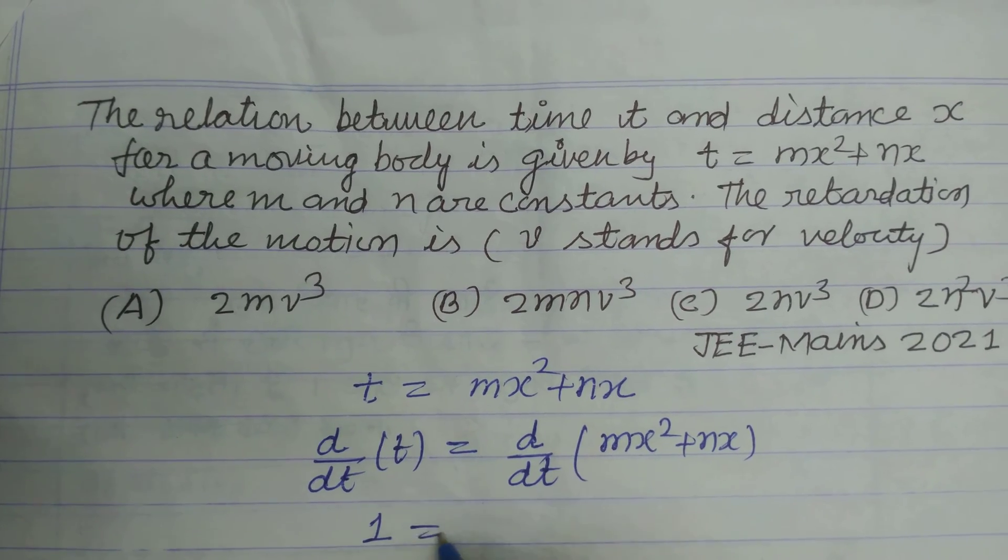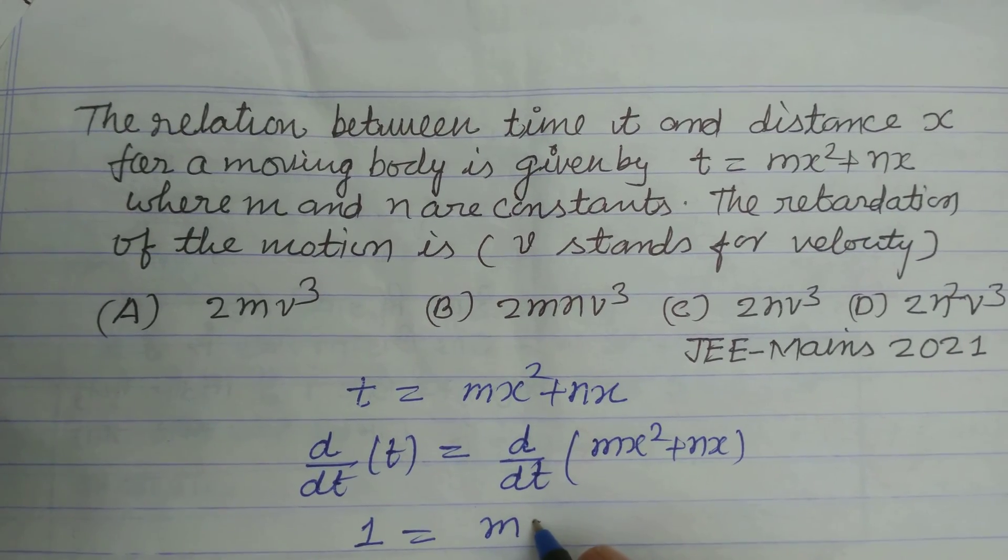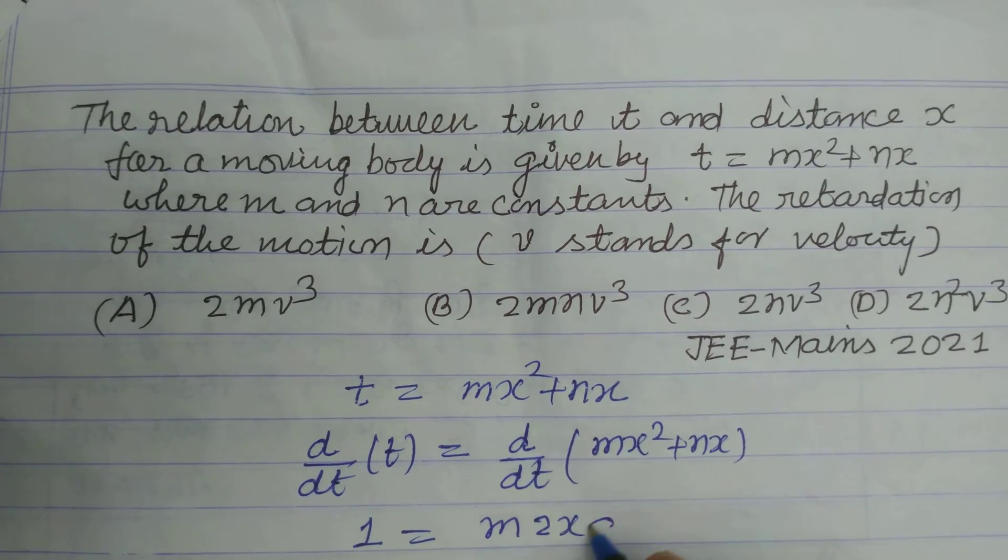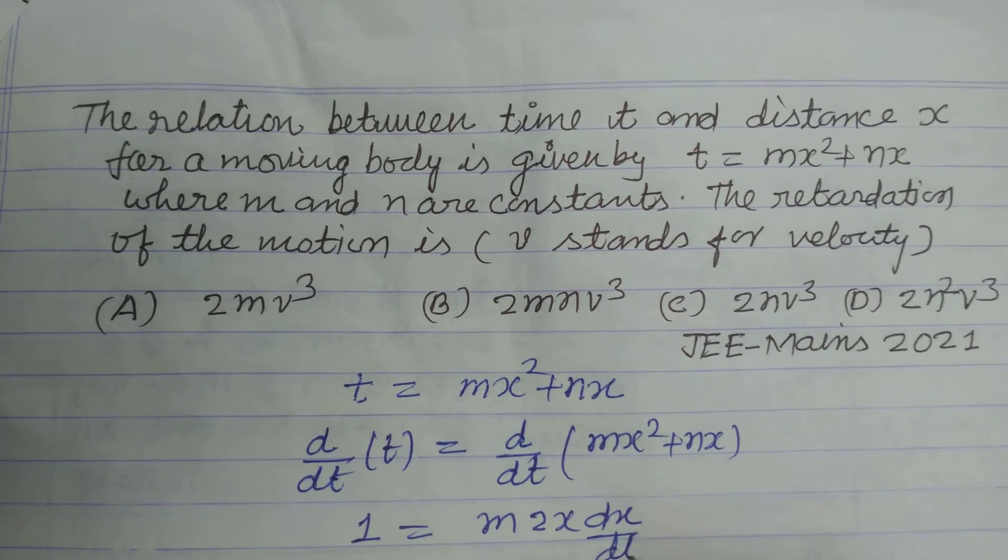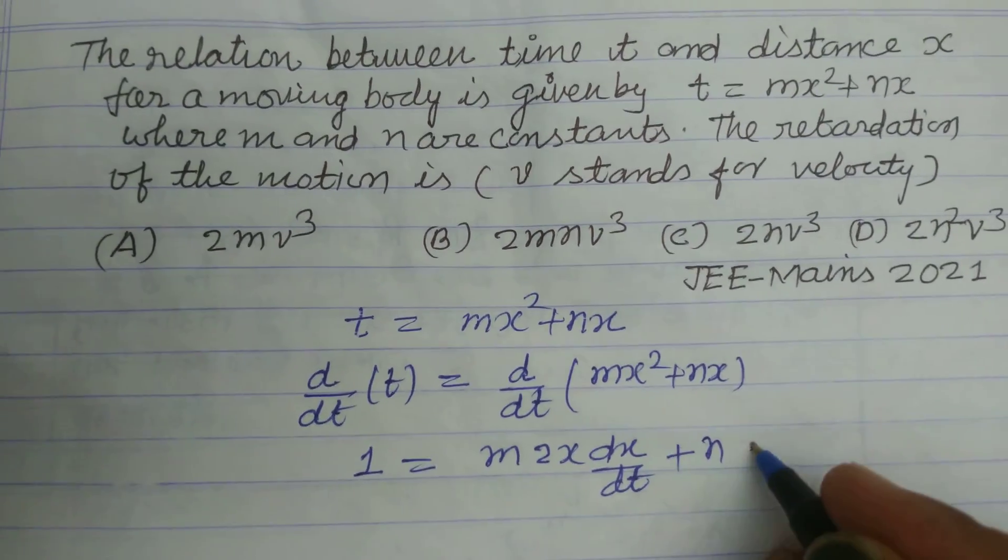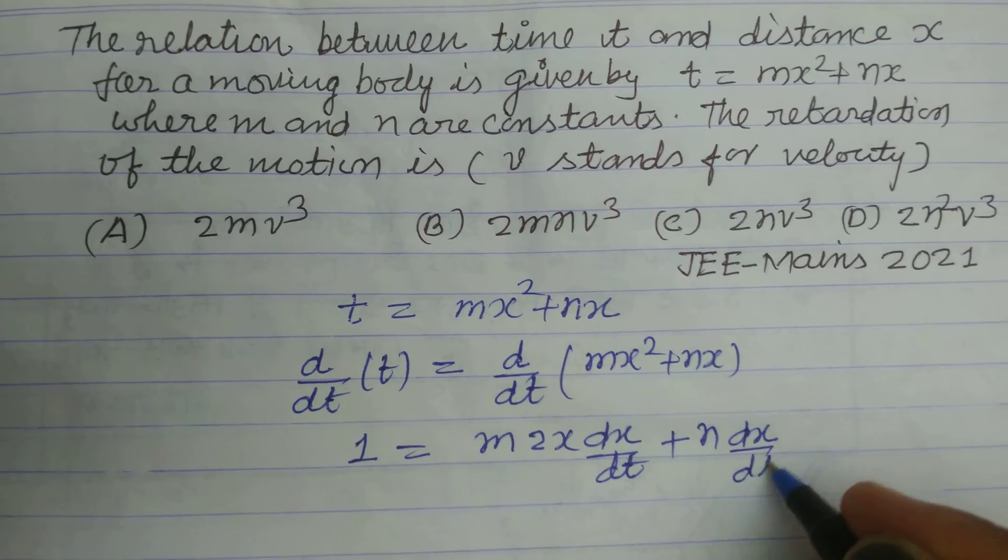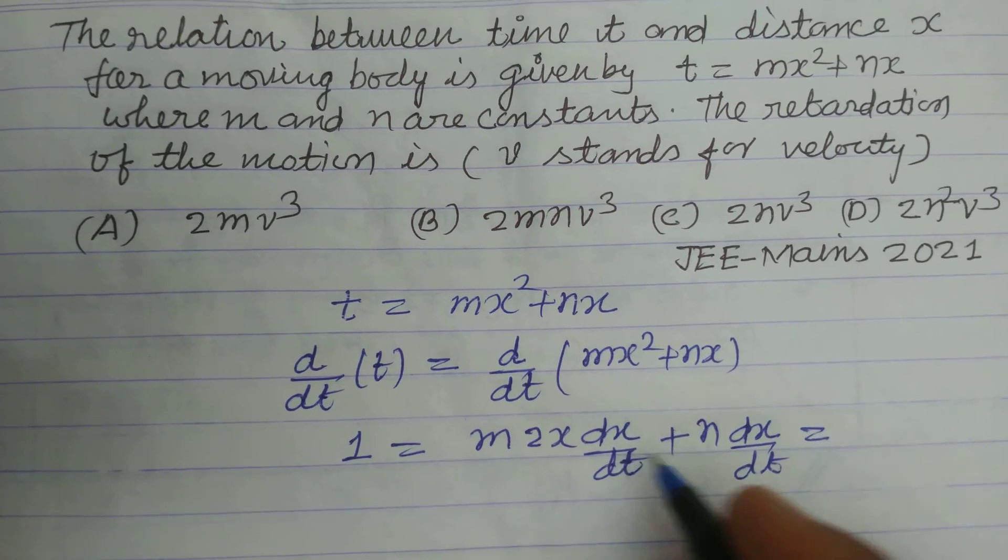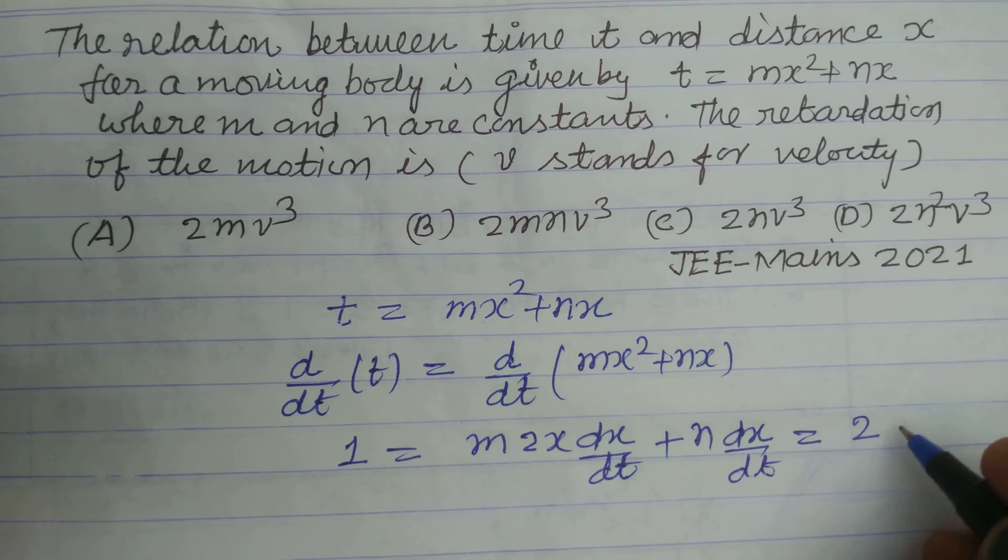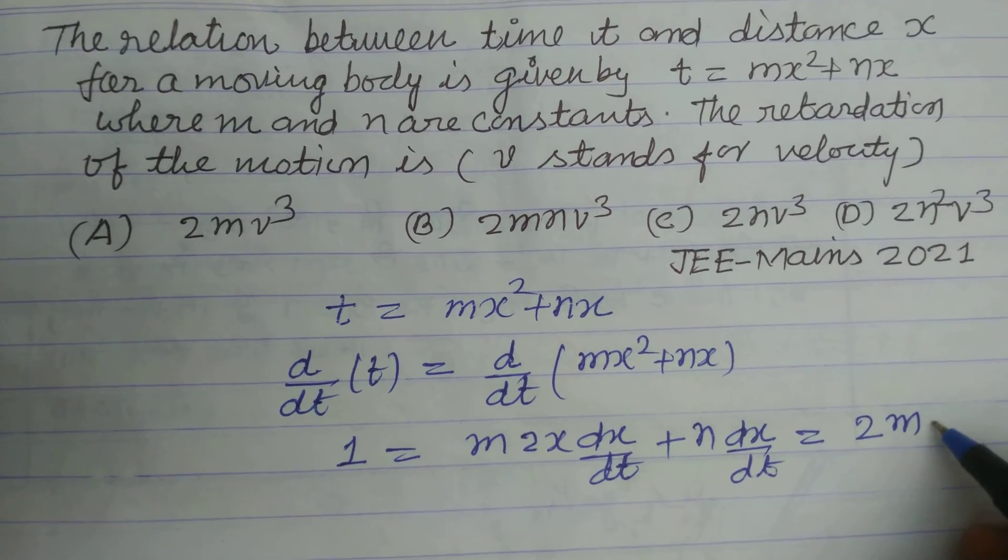...is 1, and mx² gives 2mx(dx/dt) plus n(dx/dt). We take dx/dt common, so we get (2mx + n)(dx/dt).